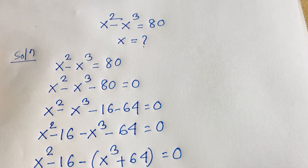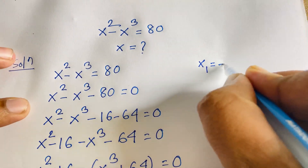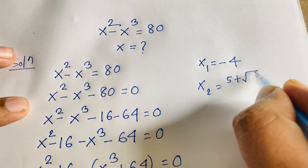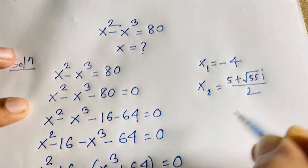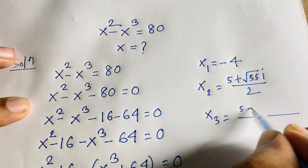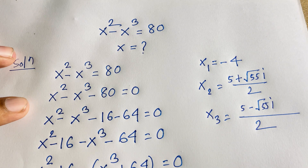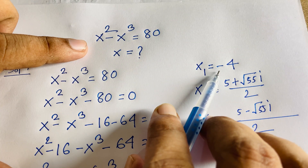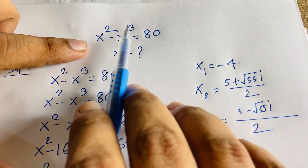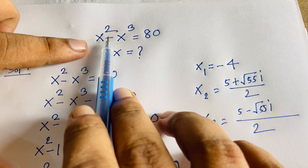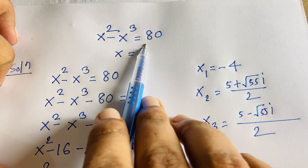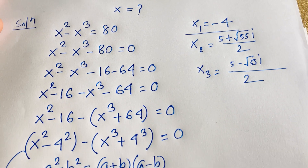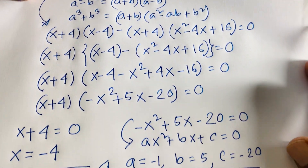So the three solutions are: x₁ equals negative 4, x₂ equals (5 plus √55·i) over 2, and x₃ equals (5 minus √55·i) over 2. Let's verify: putting x equals negative 4, we get (negative 4) squared minus (negative 4) cubed equals 16 minus (negative 64) equals 16 plus 64 equals 80. Correct! Thank you all — if you enjoyed this video please subscribe for more interesting videos. Goodbye, take care.